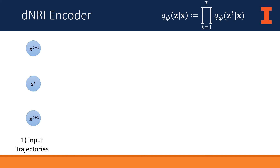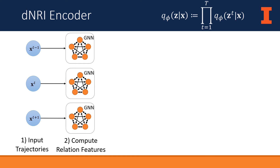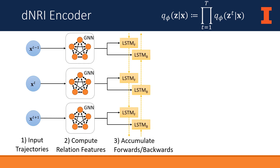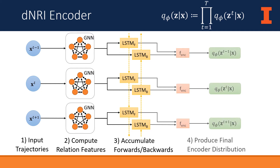As mentioned previously, the encoder considers both the past and the future of the sequence to produce relation distributions. More specifically, it uses the same feature representation for all pairs of variables computed by the prior model. It then passes these through a backward LSTM to accumulate information about the future of the sequence. The hidden states of the backward LSTM are concatenated with the hidden states of the forward LSTM from the prior model, and passed through a multilayer perceptron to produce the logits of the encoder distribution.